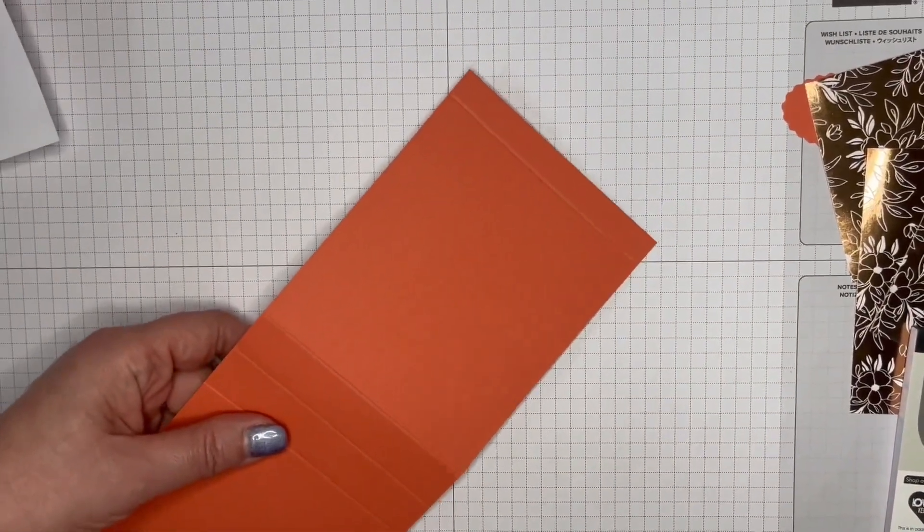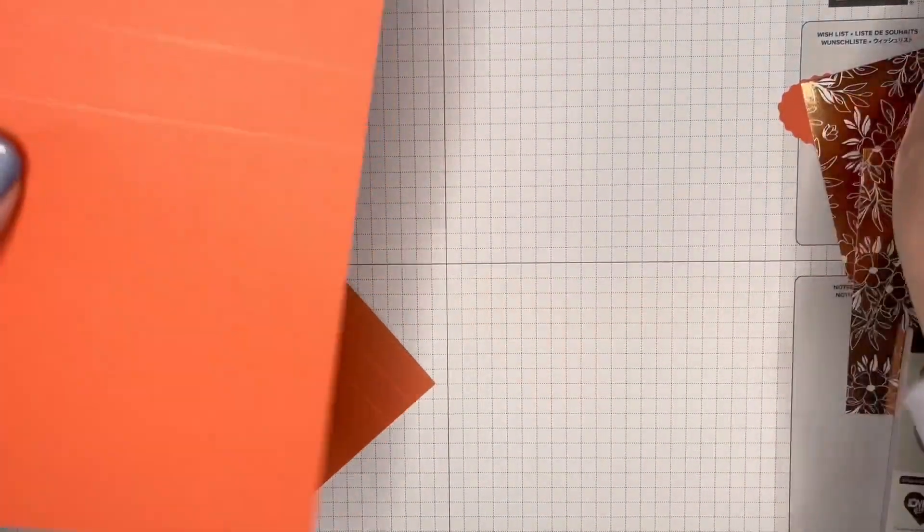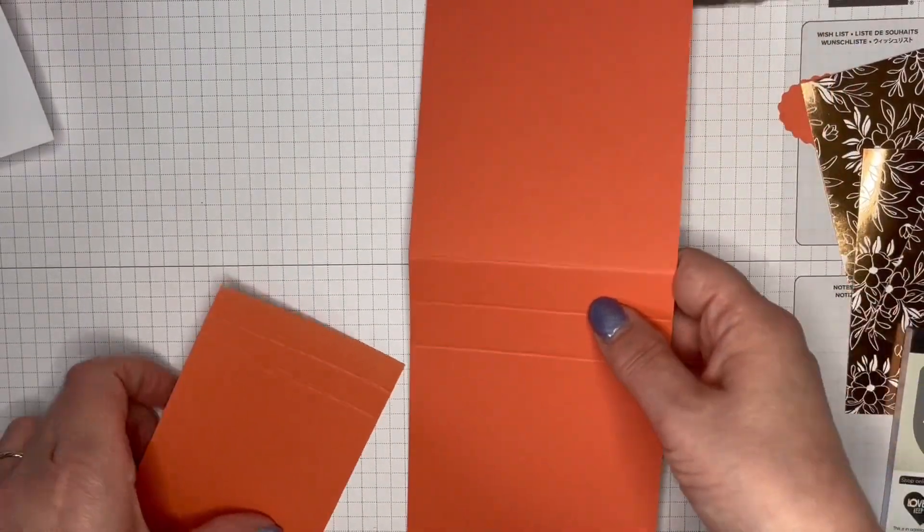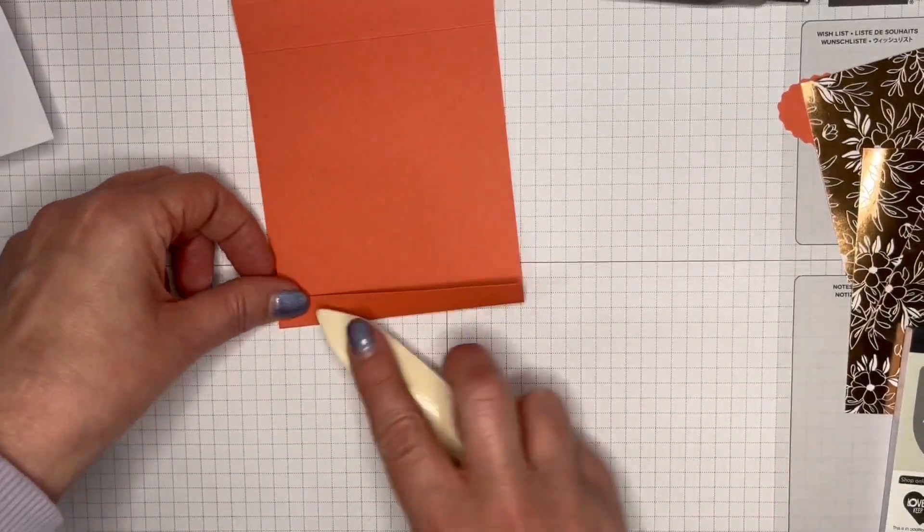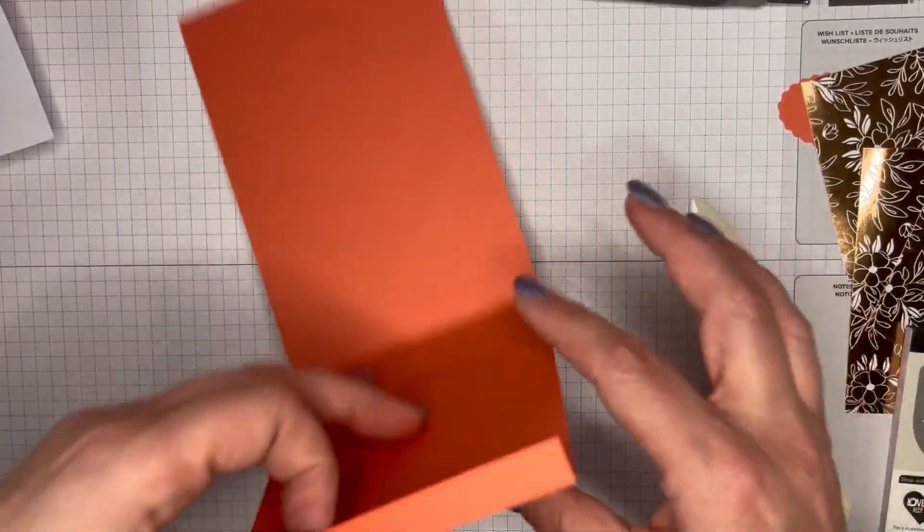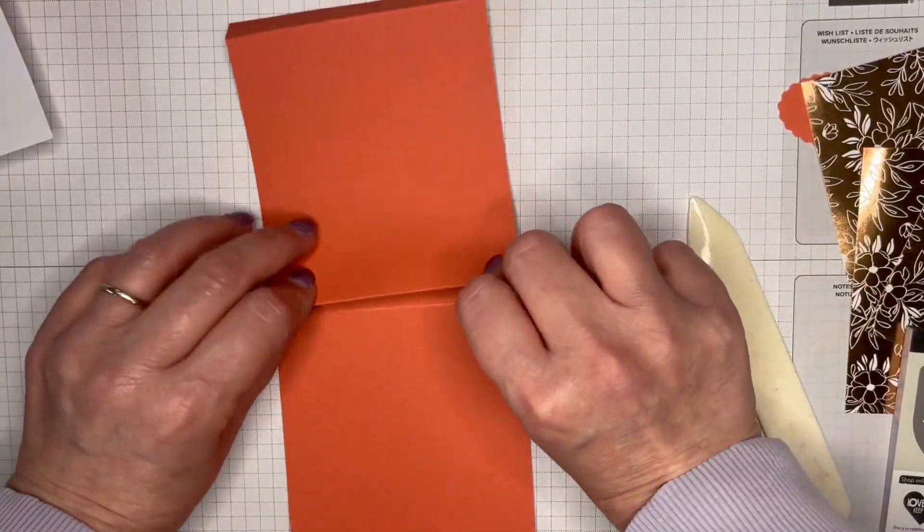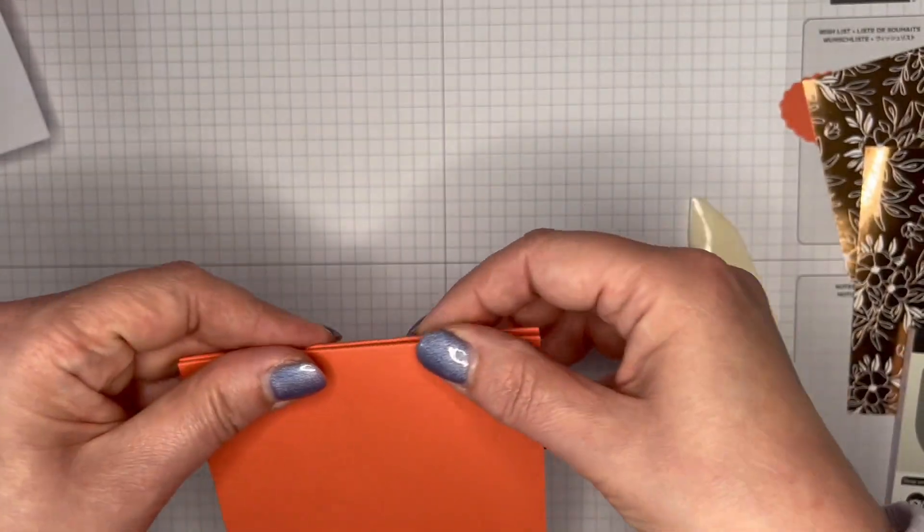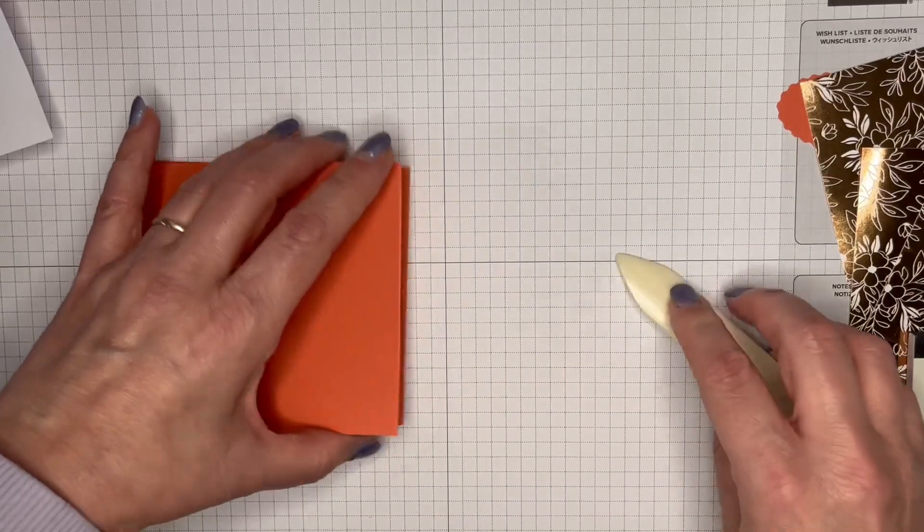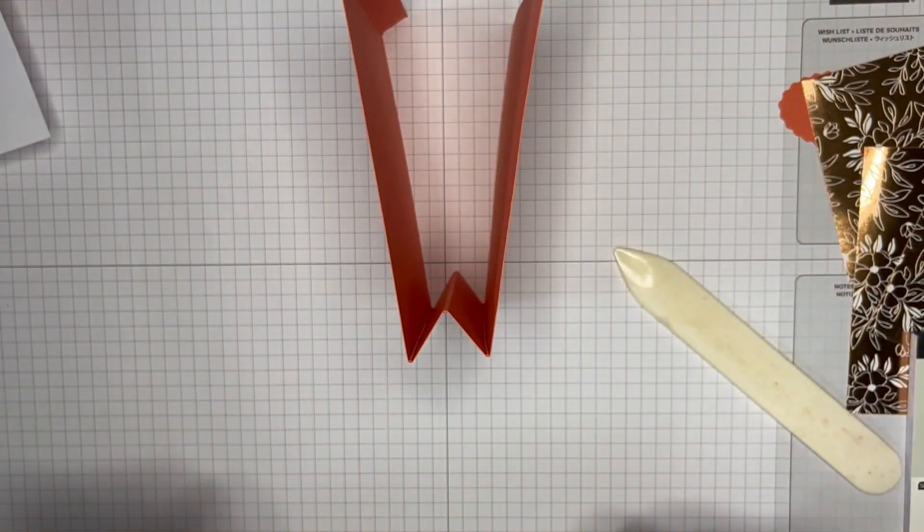So with this piece here, we've got the little narrow bit at the top, and that's just going to be our tab for gluing. Then I want to do a mountain, a valley, and a mountain fold on that, so that you essentially get that sort of W shape, like that.